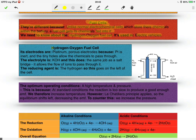The hydrogen-oxygen fuel cell, we need to know about its electrodes, and these are platinum porous electrodes. The reason we use platinum is because it's inert, so it won't react with the substances. What porous means is tiny holes, and these allow for the chemicals to pass through.